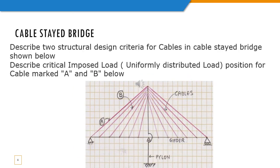Describe two structural design criteria for design of cables in cable stay bridges shown below. Describe critical live load. Describe critical live load position. Live load will be uniformly distributed load for cable marked A and B. Cable A is called backstay cable, stay cable.